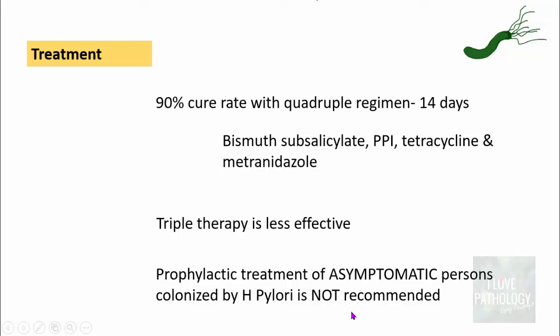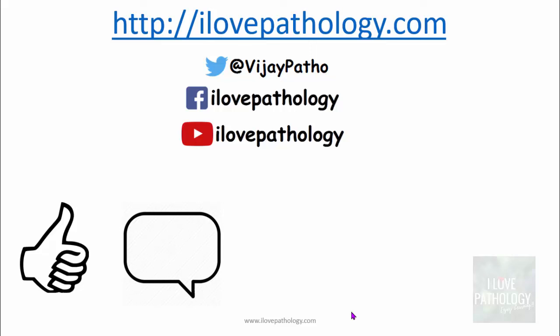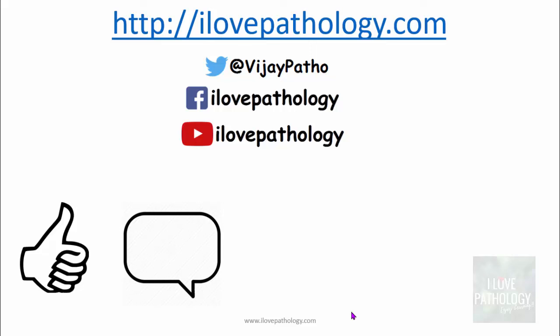That's about H. pylori associated gastritis. We talked about normal anatomy and histology, protective factors, epidemiological aspects, pathogenesis, clinical features, morphology, diagnosis, and treatment. Hit the like button if you liked this video, comment if you have any queries, don't forget to subscribe and share if you find this useful. Another interesting topic in the gastrointestinal system is coming shortly — stay tuned. Thank you.